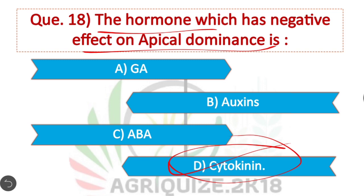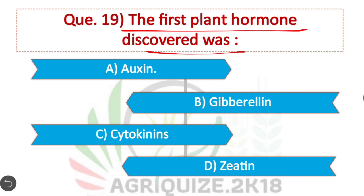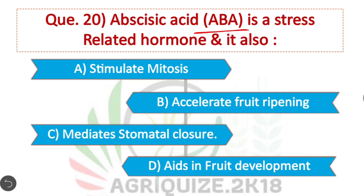Question 19: The first plant hormone discovered was — Auxin is the first plant hormone discovered. Question 20: Abscisic acid (ABA) is a stress-related hormone. It mediates stomatal closure. Option C is correct. In stress conditions, stomata are closed by the action of abscisic acid.